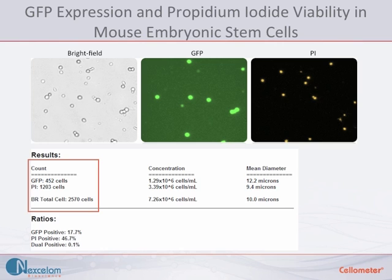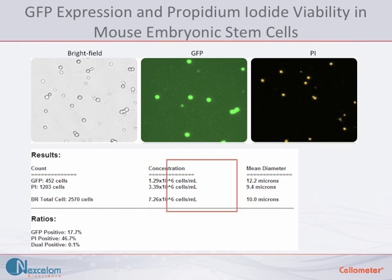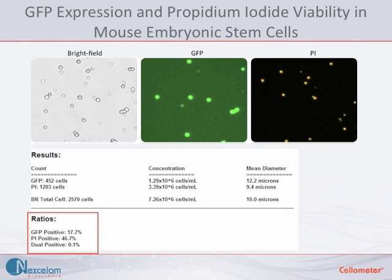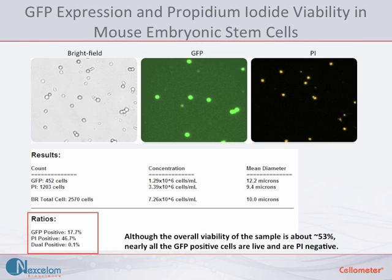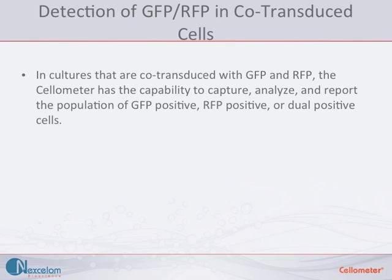The results include counts for GFP positive cells, the PI positive cells, and the total number of cells in brightfield, as well as the concentrations for each population and the mean diameter. Also reported is the percent of cells that are GFP positive, the percent that are PI positive, and the population of cells that are dual positive. Although the overall viability of the sample is approximately 53%, nearly all of the GFP positive cells are live and therefore PI negative.